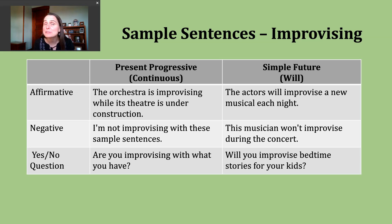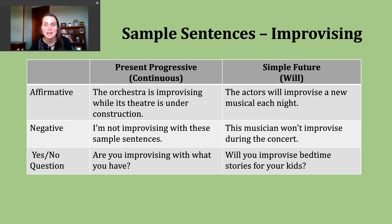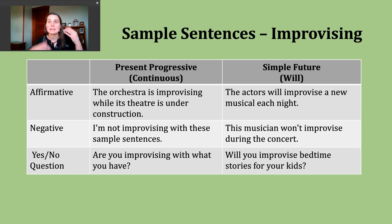Now let's move on and talk about the simple future. Today we're going to make sentences with will. Will is commonly used to make promises and predictions in the simple future. It's a little less common to hear it with plans, but some people still use it that way. The nice thing about making sentences in the simple future with will is that our structure stays the same no matter what our subject is: subject, will, and then the base verb. An example: the actors will improvise a new musical each night — each show will be a little bit different.